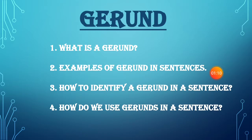So let's get started. We all know that non-finite verbs have three kinds: gerund, participle and infinitives. Today we are going to learn what a gerund is first, and I will also give you multiple examples to make you understand clearly. This will enable you to identify a gerund in a sentence and also learn how to use a gerund in a sentence.